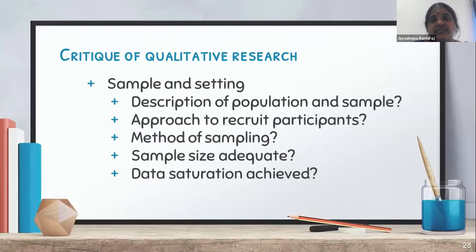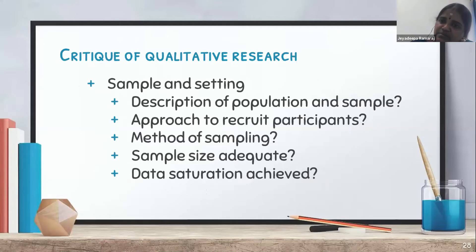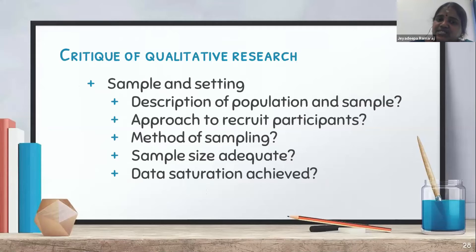In sample and setting, you check whether the population and samples are described, what approach was used to recruit participants, what criteria was followed, what sampling method was used, whether the sample size — which is usually small in qualitative studies — is adequate, and whether the data saturation point is achieved. These are all questions to be answered regarding sample and settings.